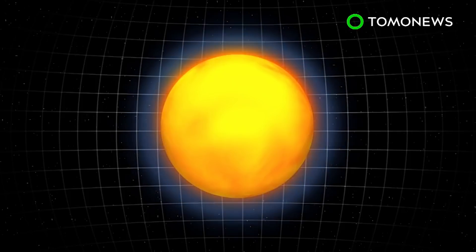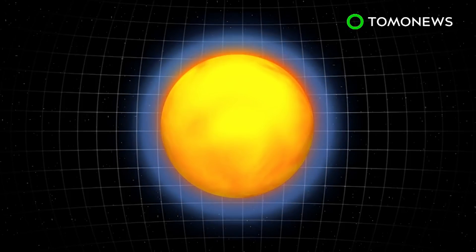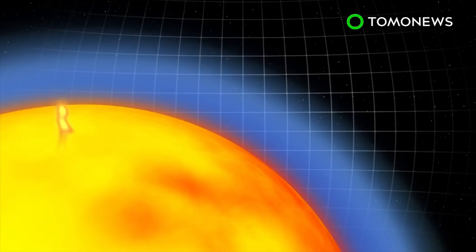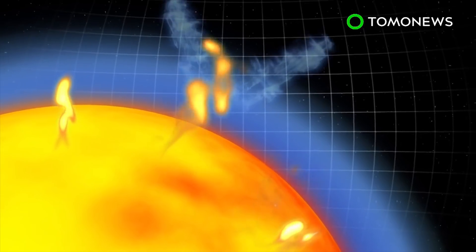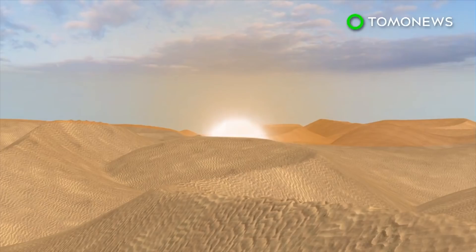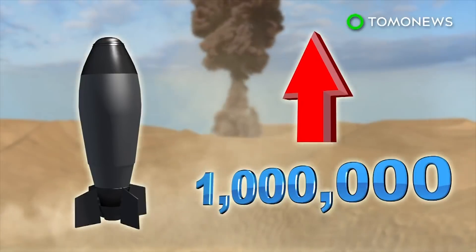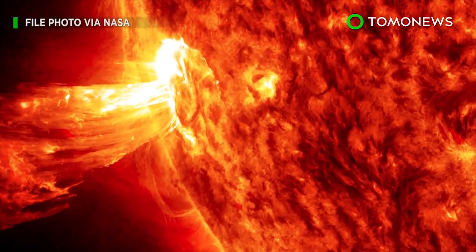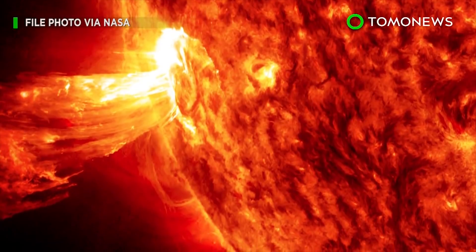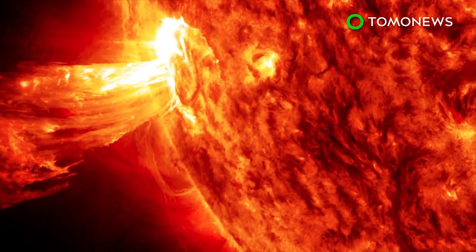According to NASA, solar flares take place when magnetic energy built up within the sun's atmosphere is suddenly released. They impact everything on the electromagnetic spectrum, from radio waves to X-rays. The energy released is equivalent to millions of 100 megaton nuclear bombs exploding at the same time. The last solar flare of similar strength occurred in 2006, and the strongest on record took place in 2001.